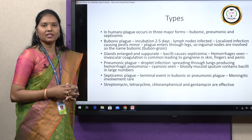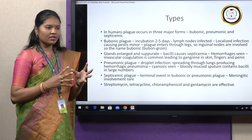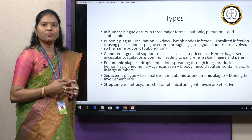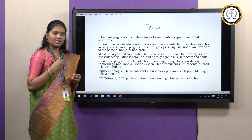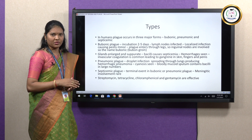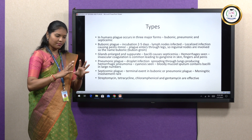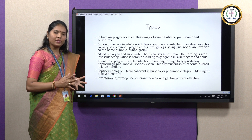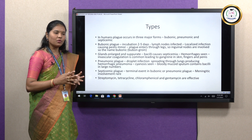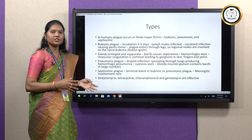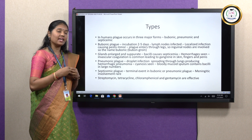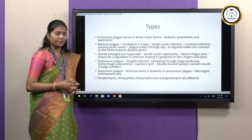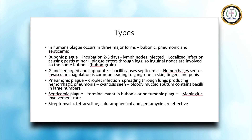Gangrene is a condition where a particular region of the body is left anoxic — oxygen supply is completely cut and blood circulation is stopped to that area, causing it to become totally black. The only way to escape from gangrene is to amputate that part completely, otherwise gangrene will spread throughout the body.